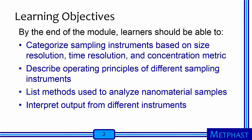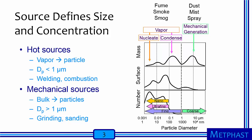Sampling Instrumentation for Airborne Nanomaterials. My name is Tom Peters from the University of Iowa. By the end of this module, learners should be able to categorize sampling instruments based on size resolution, time resolution, and concentration metric, describe operating principles of different sampling instruments, list methods used to analyze nanomaterial samples, and interpret output from different kinds of instruments.